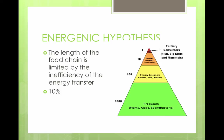Only about 10% of the energy is transferred from trophic level to trophic level. For example, if we start with 1,000 kilograms of biomass, only 100 kilograms are transferred to the next level, then only 10 to the next, and the tertiary consumers at the top only get 1 kilogram. Therefore, numbers are respectively decreased as we move up the energy pyramid.